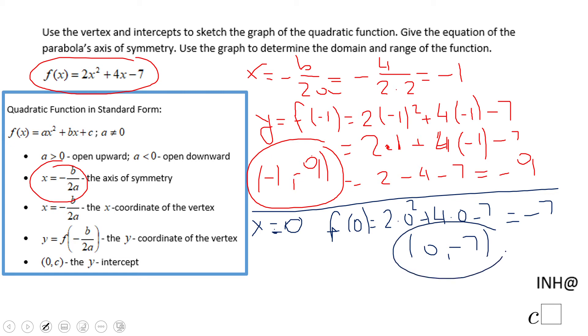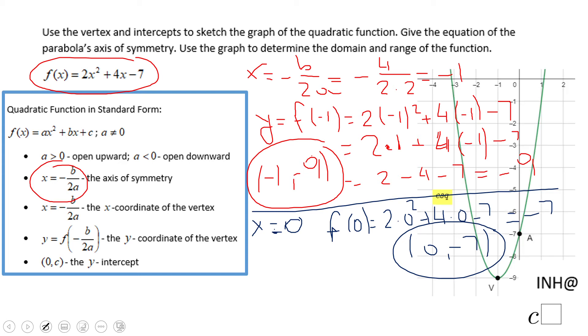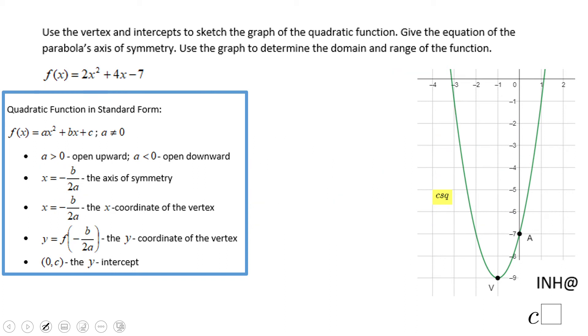Having these two points, we have enough for graphing. You see here we can reflect it over the axis of symmetry and get the other point, so very easy to graph.